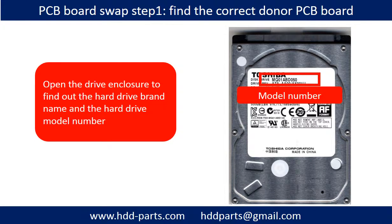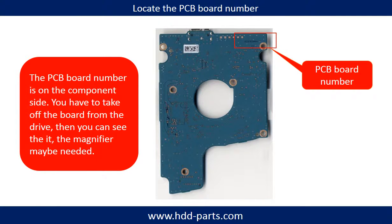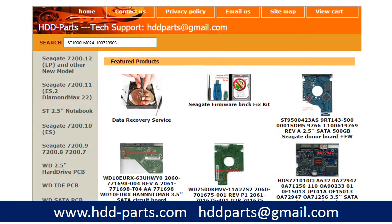PCB board swap, Step 1: Find the correct donor PCB board. Open the hard drive enclosure and find out the brand name and the hard drive model number. This picture shows where to find the Toshiba 2.5-inch hard drive PCB board number. Different brand names have different PCB board numbers. You may go to HDD-Parts.com to check out other brand name PCB board numbers. After knowing the hard drive model number and the PCB board number, you may use them as a reference to search for the correct donor board.